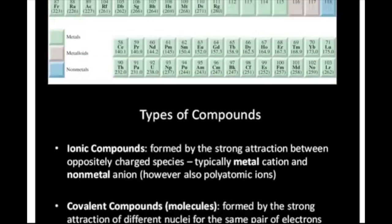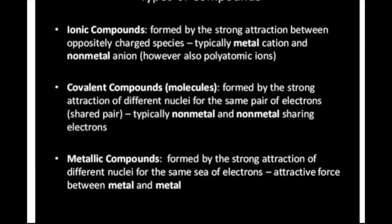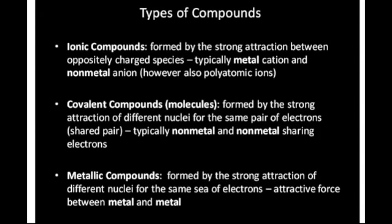For compounds, there are three types that you need to be familiar with, and once you're familiar with them you can predict their chemical and physical properties. The first type are ionic compounds, formed by the strong attraction between oppositely charged species, typically between a metal cation and a non-metal anion. However, we will also need to become familiar with the polyatomic ions and be able to identify those.